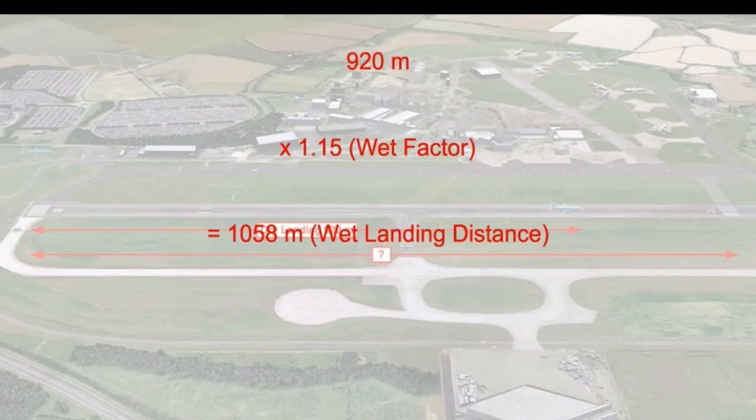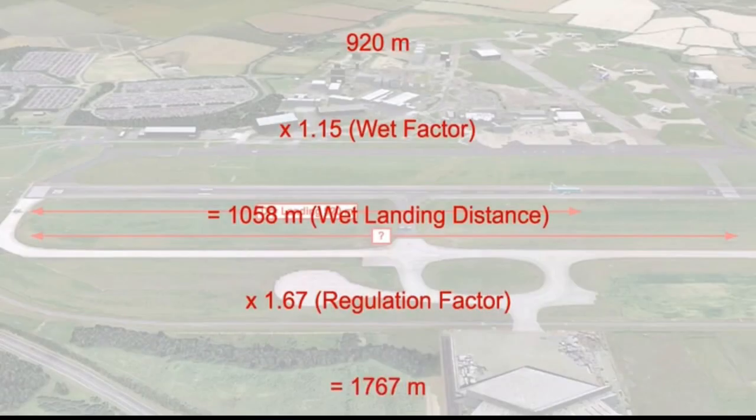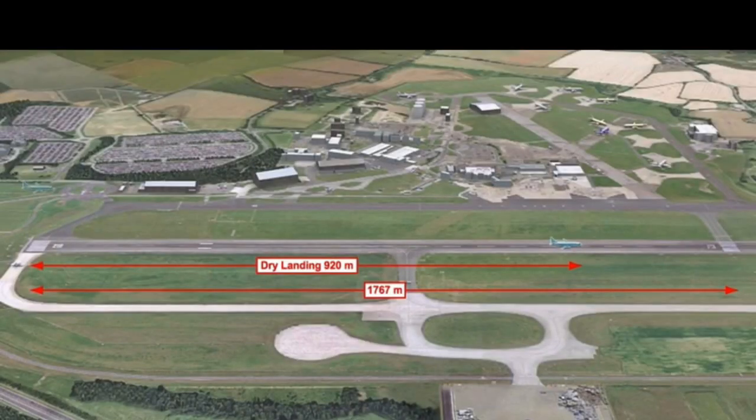The wet landing distance of 1058 meters must fall within 60% of the landing distance available. Multiplying 1058 by 1.67 gives 1767 meters — so if the runway is wet and the dry landing distance is 920 meters, the minimum runway length required is 1767 meters for a turbojet engine. The combined wet factor for turbojet is 1.92 and for turboprop is 1.64.